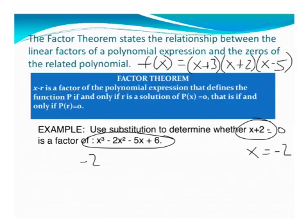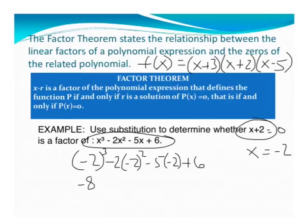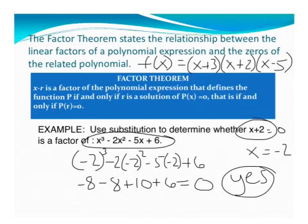All I'm going to do is plug in negative 2 for each x, and I can do this in my calculator, but for here I'm going to do it by hand. Make sure you're always using parentheses. So we get negative 8. Negative 2 cubed is negative 8. Negative 2 squared is 4 times negative 2 is negative 8. And here we get positive 10, and we get 6. So this gives me negative 16 plus 16 is 0. So my answer would be yes, it's a factor.